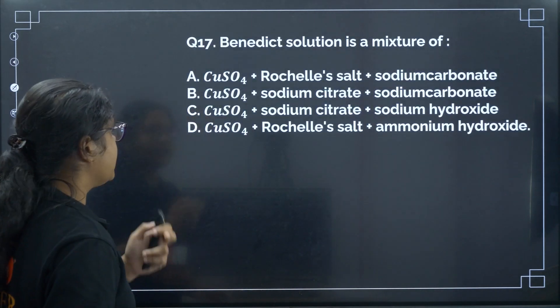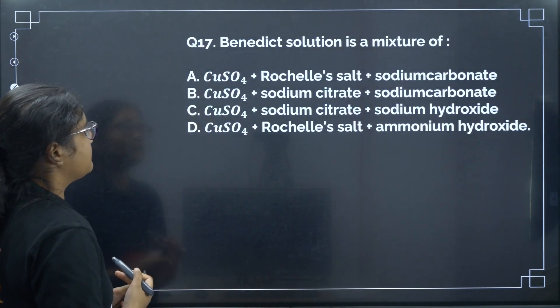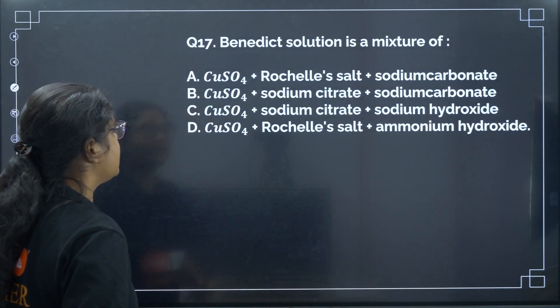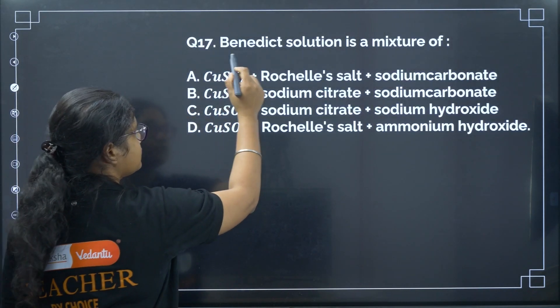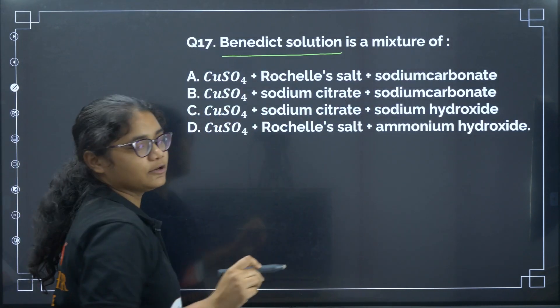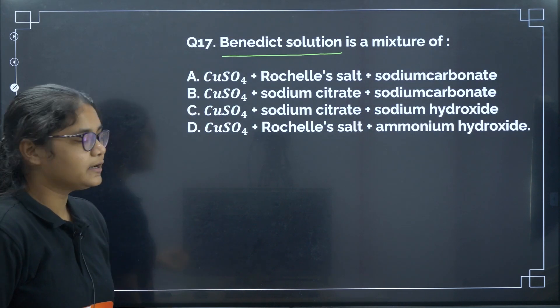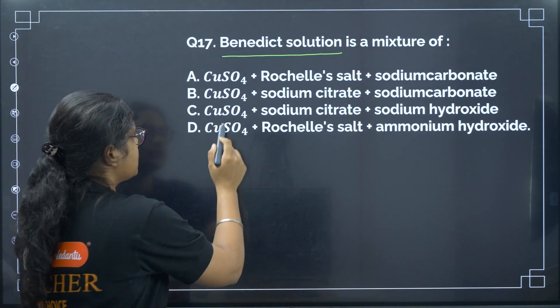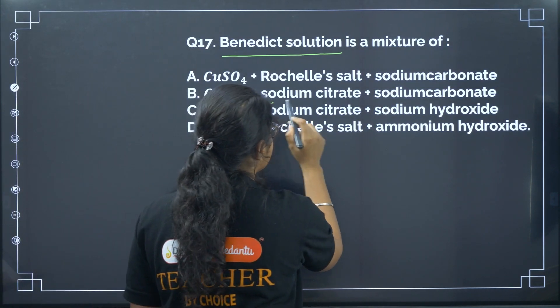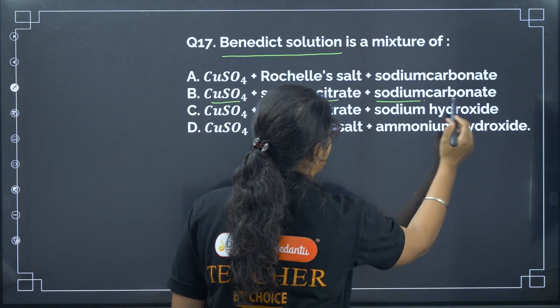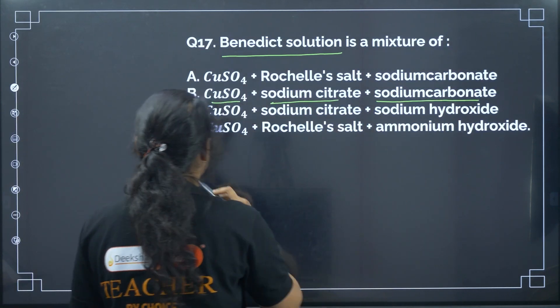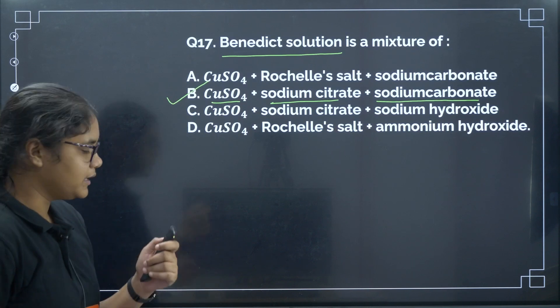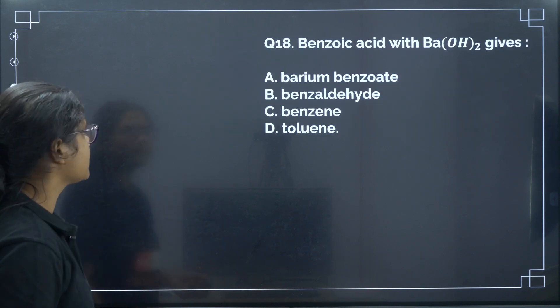Next: Benedict's solution is a mixture of? Benedict's solution is used to detect reducing sugars. It is a mixture of copper sulfate, sodium citrate, and sodium carbonate. Correct answer: option B.